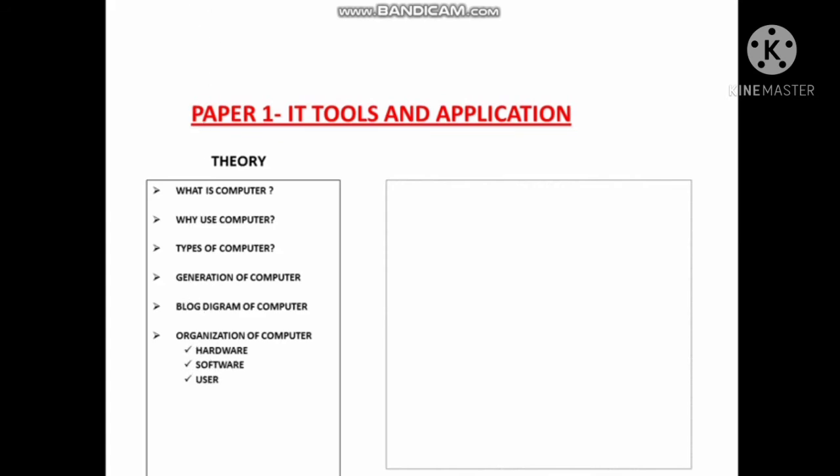The first paper, IT Tools and Application, has theory and practical. Theory means: What is computer? Why use computer? Types of computer, Generation of computer, Organization of computer, Block diagram of computer. Organization means the hardware, software, user. Computer virus, computer language, etc.